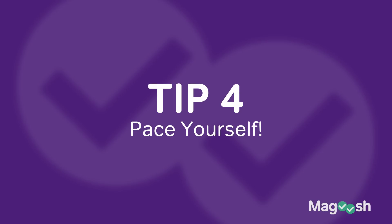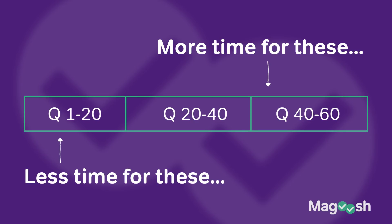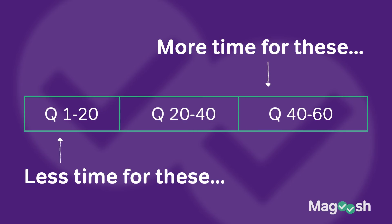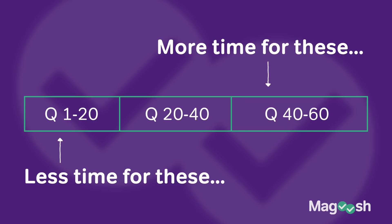Number four is work on your pacing. On the math section you're going to see 60 questions and you have 60 minutes to answer them — that translates to one minute per question. But depending on the type of question, think about your pacing more nuanced: give yourself a little more than a minute for the difficult questions near the end of the section and less time for the easy ones.